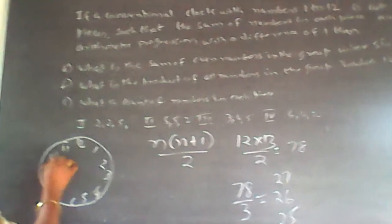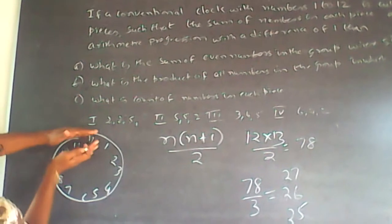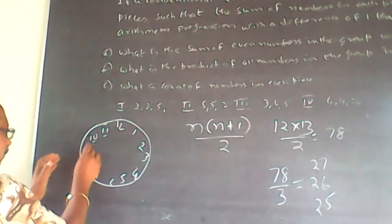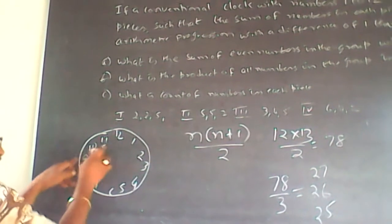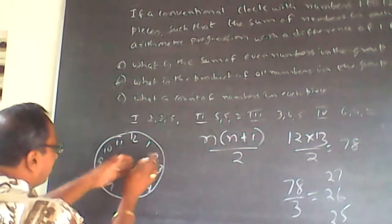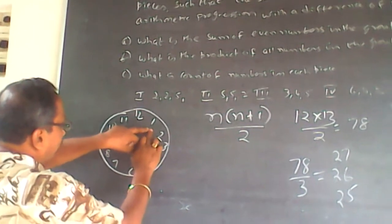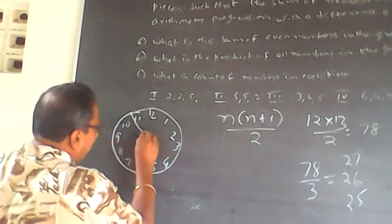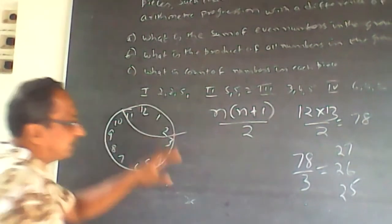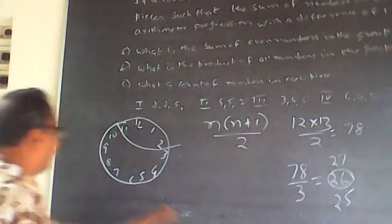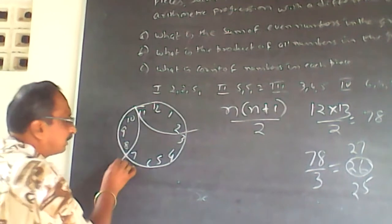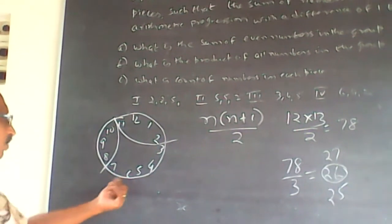Checking: 10+11+12 = 33, too large. Trying 11+12+1+2 = 26 — that works! So that piece is cut. Now checking for 27: 10+9+8 = 27. That works too. The remaining numbers will sum to 25. So the clock is cut such that the sums are 26, 27, and 25 — an arithmetic progression with difference of 1.